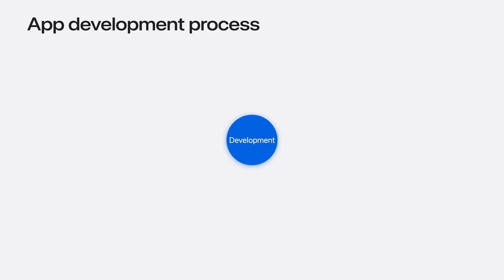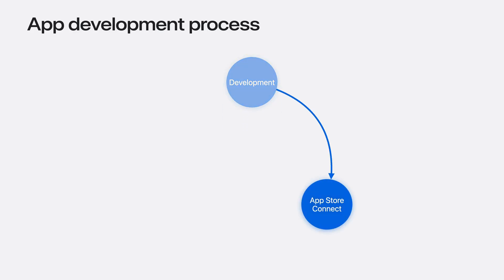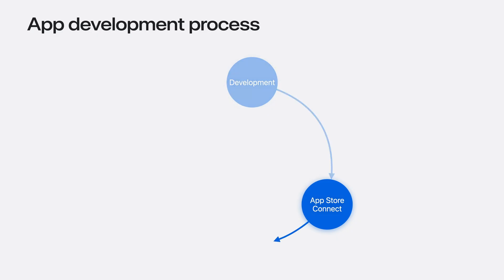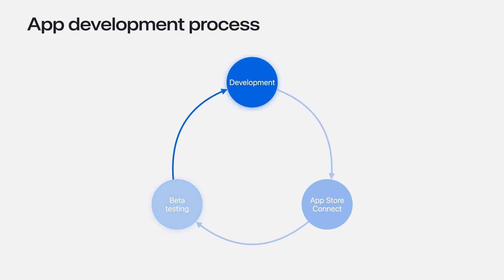App development is an iterative process. You start with new features or bug fixes and upload a new build to App Store Connect. Once the new build is distributed, your beta testers submit feedback, and your next development phase incorporates the feedback from the previous build. The key is you want to run this cycle as fast as possible. For example, when your users report a crash, you want to fix it as soon as possible for better user experience. That's where today's updates come in.